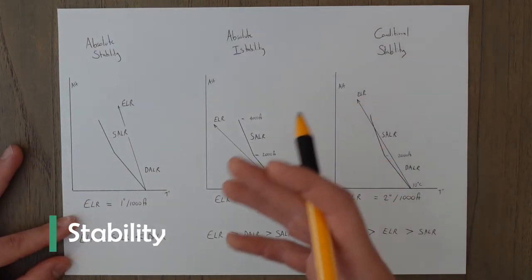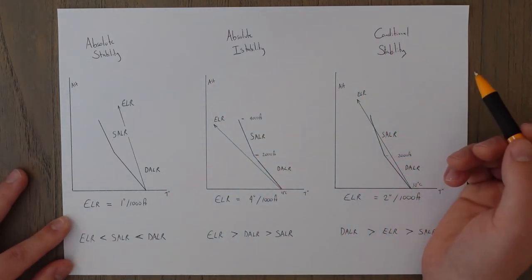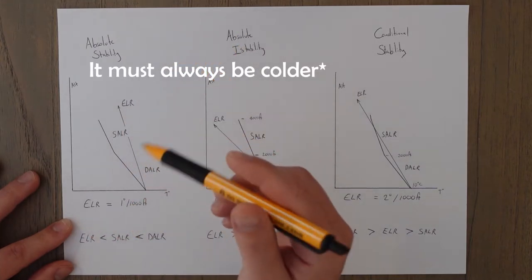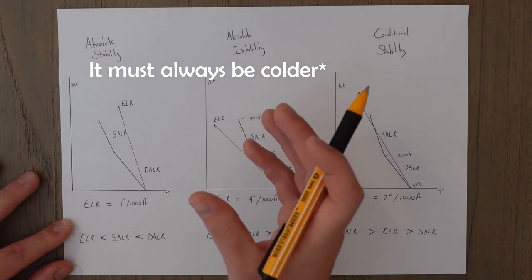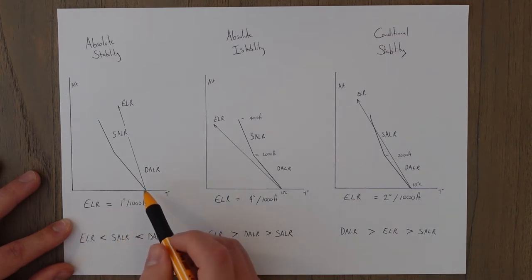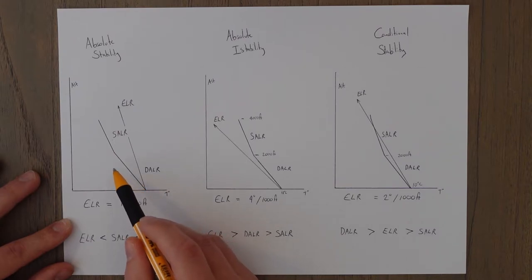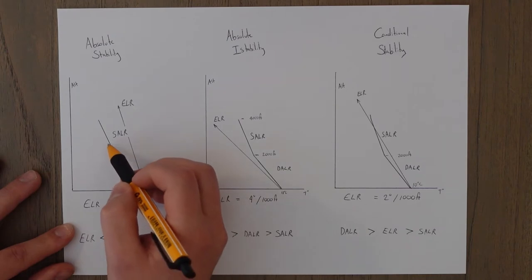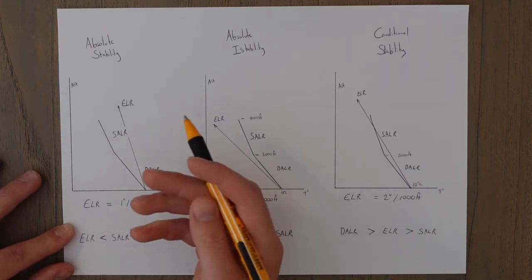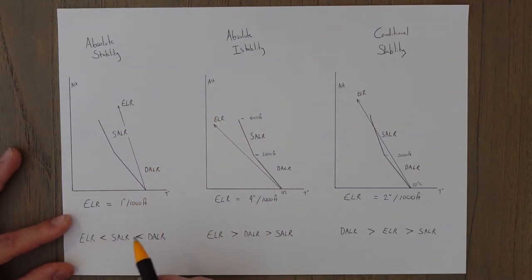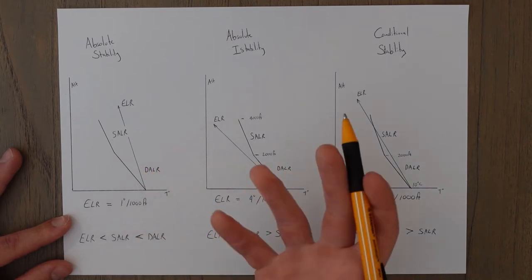The first stability type is absolute stability. This means the temperature of the parcel of air must always be warmer than the environmental air surrounding it. In this diagram we've used an environmental lapse rate of 1 degree per thousand feet, which means a rising parcel of air will always be cooling faster — at 3 degrees for dry or 1.8 for saturated — so at any altitude the rising parcel is always colder, more dense, and will tend to sink. For absolute stability you need the environmental lapse rate to be lower than both the saturated and dry adiabatic lapse rates — below 1.8 degrees per thousand feet.